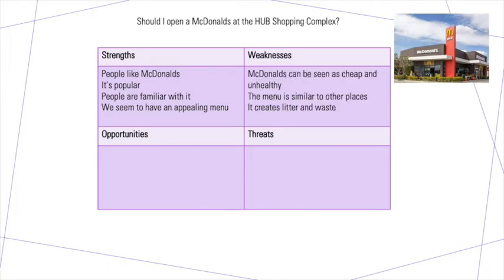Some weaknesses: some people see McDonald's as cheap and unhealthy — that's something we could control by changing ingredients, but it would cost money, so it's unlikely we'd do it. The menu is also similar to other places. If I'm driving past a Hungry Jack's and a McDonald's looking for a breakfast hash brown, it probably doesn't matter which one I go to — it depends on what's more convenient. No one's going to cross the road for a McDonald's hash brown over a Hungry Jack's hash brown. That's a weakness.